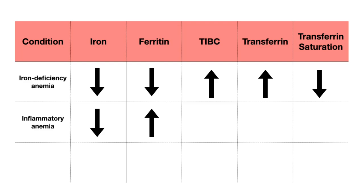Another thing to note is that ferritin is also an acute phase reactant, just like hepcidin, so it is going to increase when there is chronic inflammation. And because our ferritin levels are high, transferrin is going to do the complete opposite — our TIBC and transferrin are going to be low. In this case, our transferrin levels are low but they're also not saturated with iron because we have low iron, so our transferrin saturation is going to be low as well.